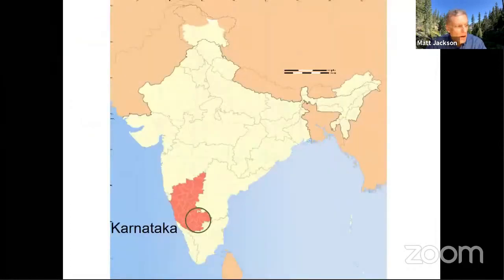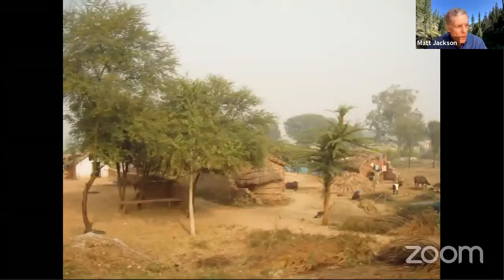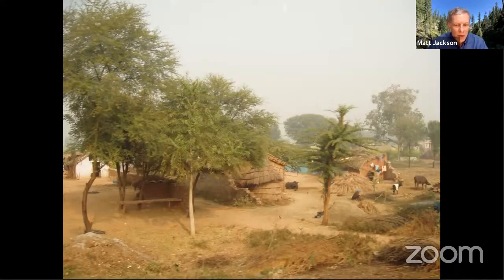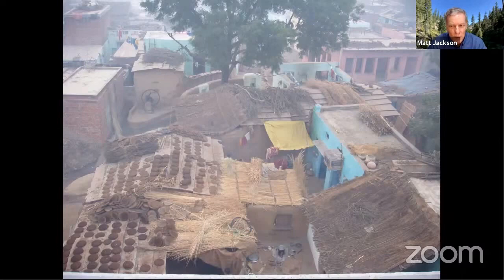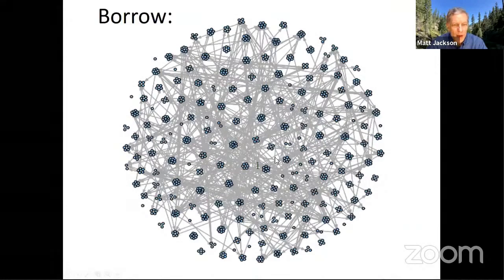Karnataka is in southern India, in an area about a 100-kilometer band around Bangalore. These are relatively poor villages — some agriculture, some sericulture such as raising silkworms, and other kinds of work.